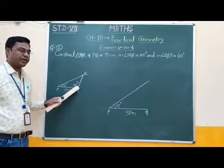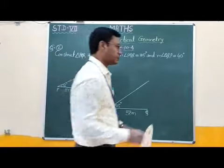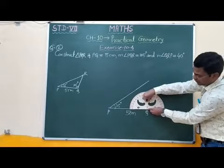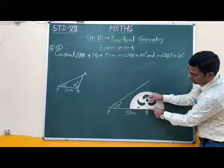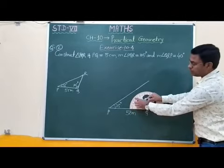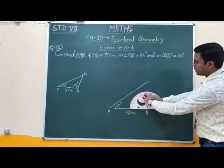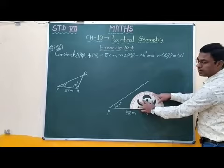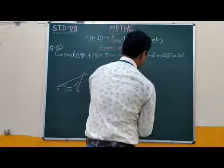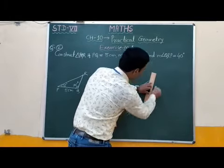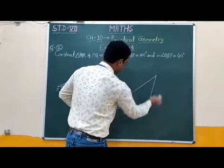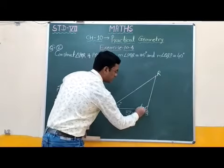Now this angle at Q is 105 degrees. Therefore, we place the midpoint of the protractor at vertex Q. Since the baseline is on the left of the midpoint, we use the outer scale: 10, 20, 30, 40, 50, 60, 70, 80, 90, 100, and 105 — this angle is between 100 and 110. We mark 105, then join these two points with the help of a scale and extend the side. This point is R, and this angle is 105 degrees.